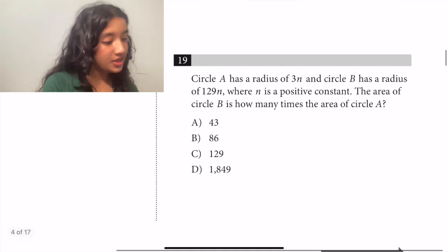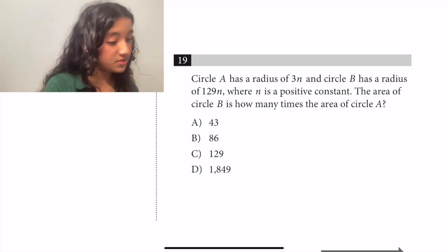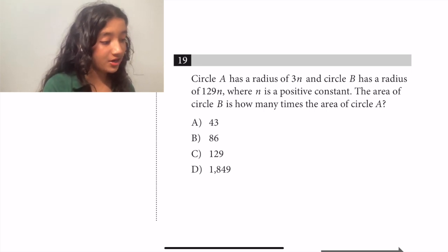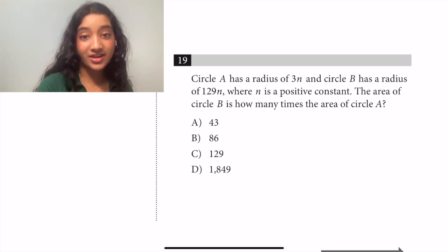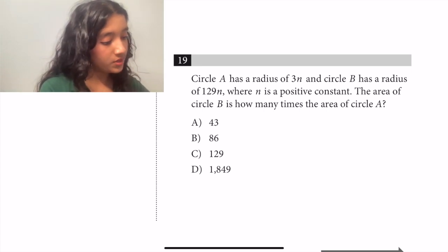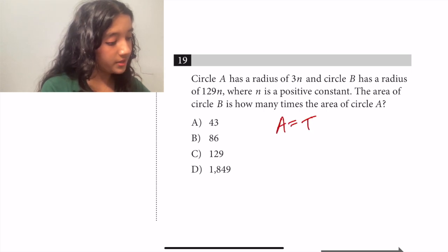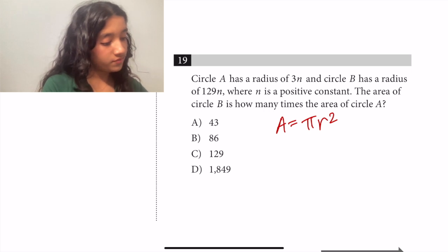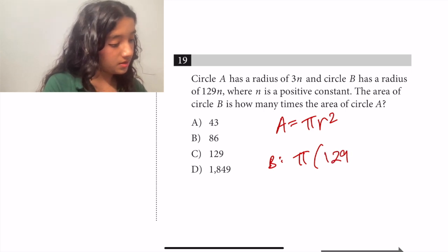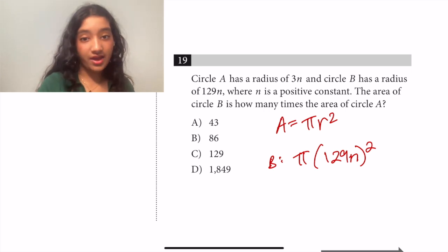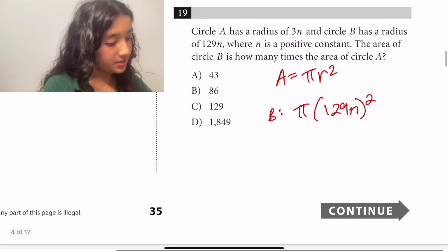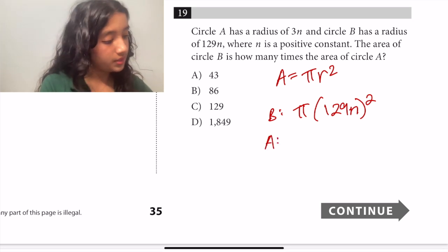Moving on to question 19. Circle A has a radius of 3n and circle B has radius of 129n, where n is a positive constant. The area of circle B is how many times the area of circle A? So first let's find expressions for the area of circle B and the area of circle A and then we'll see if anything cancels out. So the area of circle B, well we know that area is equal to π times the radius squared. So the area of circle B will be π times, in this case the radius is 129n squared. So let's just leave that as it is for now. And now let's calculate the area of circle A.